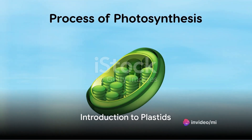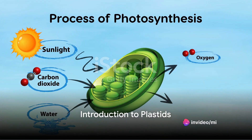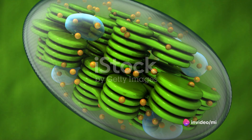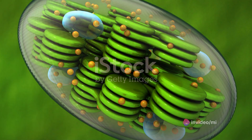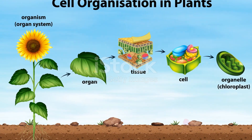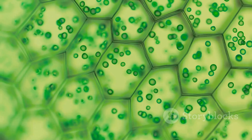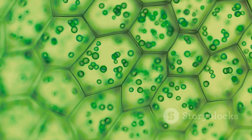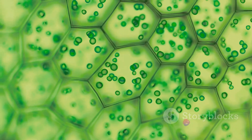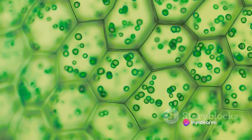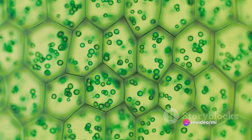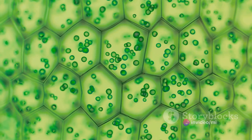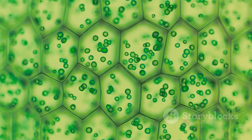Ever pondered over the question: where does photosynthesis occur in a cell? The answer lies in a special type of cell organelle known as a plastid. Plastids are unique and crucial components of plant and algal cells, housing a variety of functions that are vital for the cell's survival and growth. Today we're going to venture into the microscopic world of plastids, exploring their various types and functions.